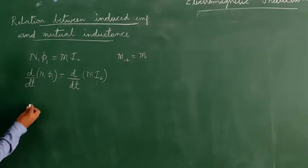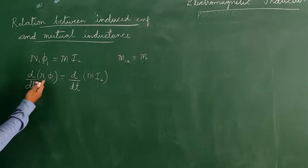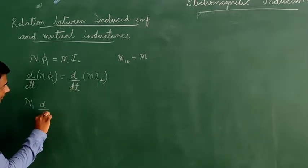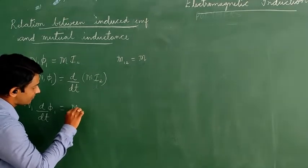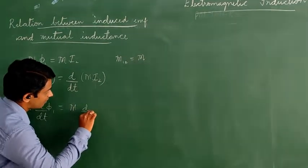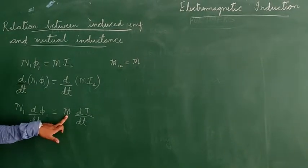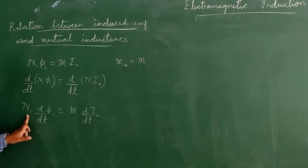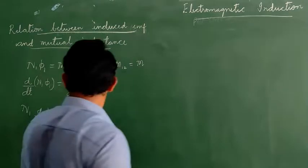Applying the differentiation and taking out constant terms, since mutual inductance M cannot vary and N1 (number of turns in solenoid S1) is also constant, we get: N1 × dφ1/dt equals M × dI2/dt.